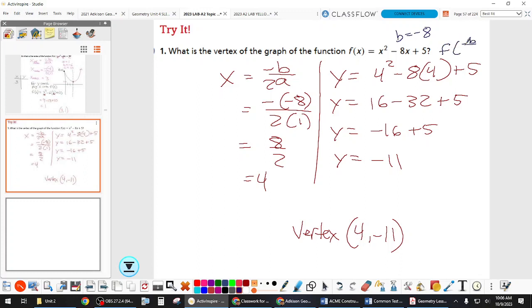And then the F of opposite of B over 2A is plugging that 4 in for X. And then we just solved or found the value of Y and got our vertex.